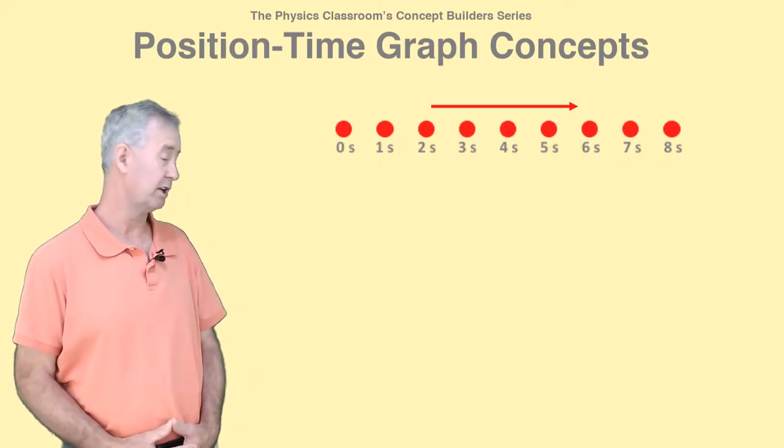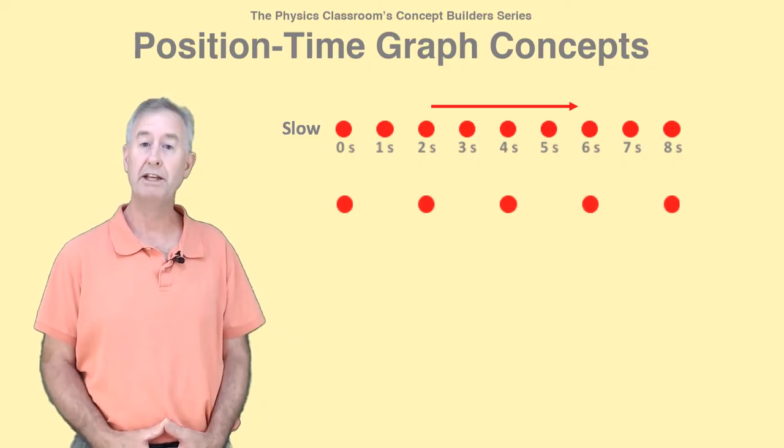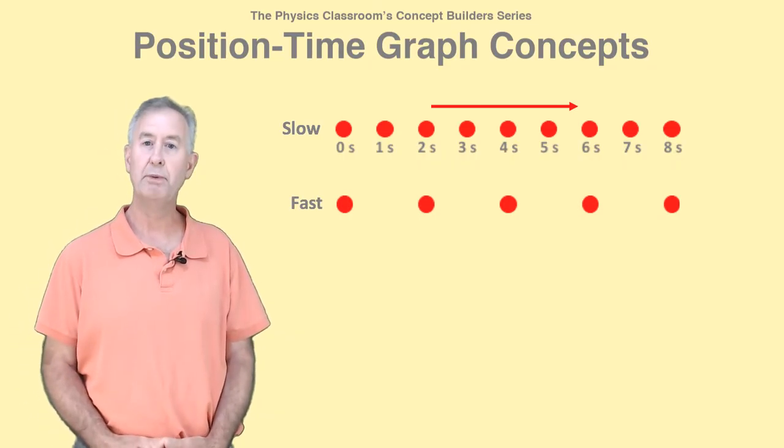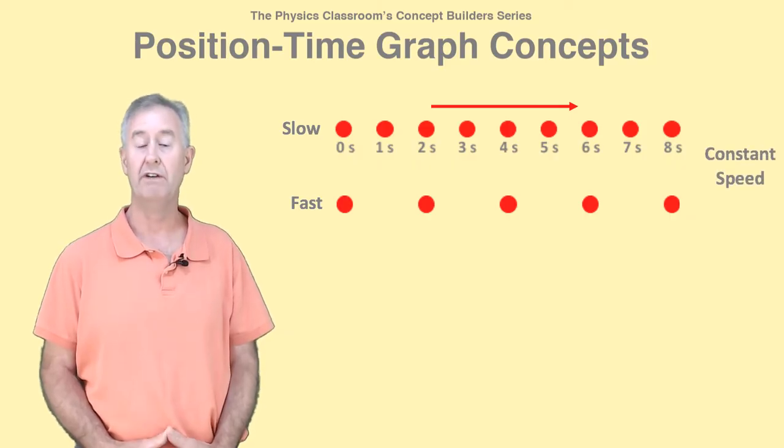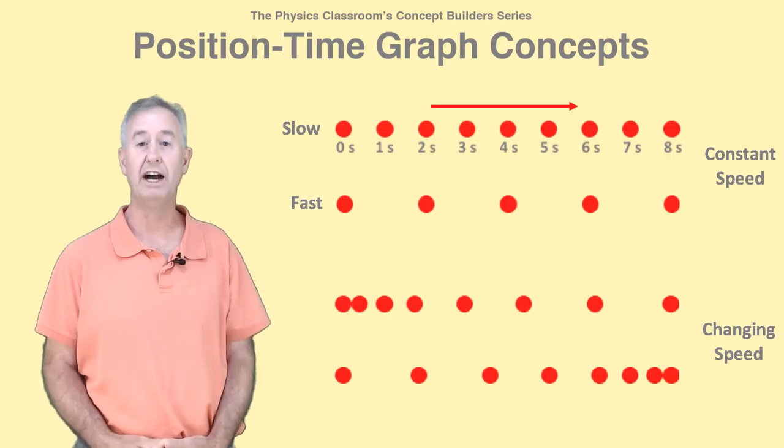If you notice the dots are really close together, the object's moving slow. But if the dots are spaced further apart, the object's moving fast. Evenly spaced dots are indicators of a constant speed motion. But if the spacing between adjacent dots is changing, you know the object's speeding up or slowing down.